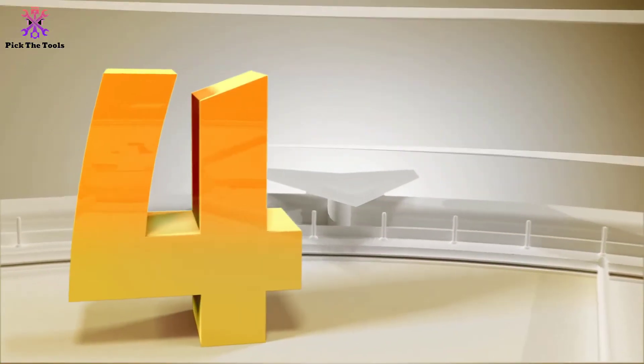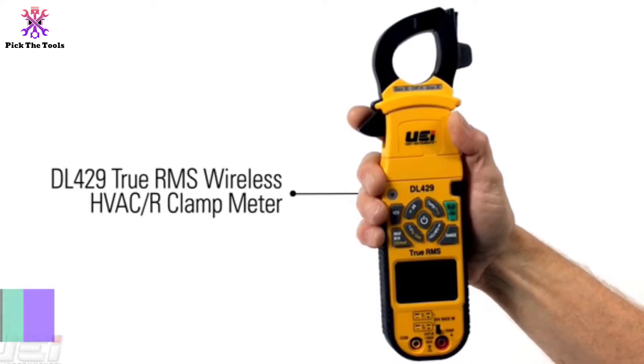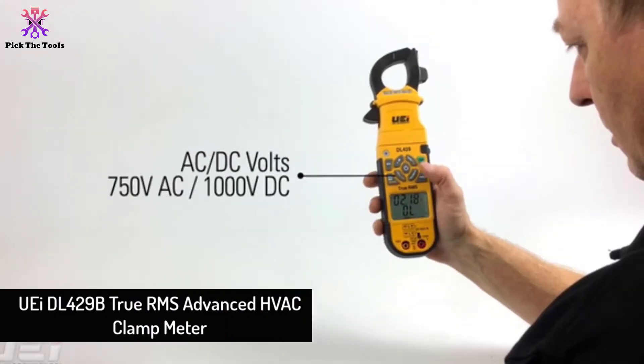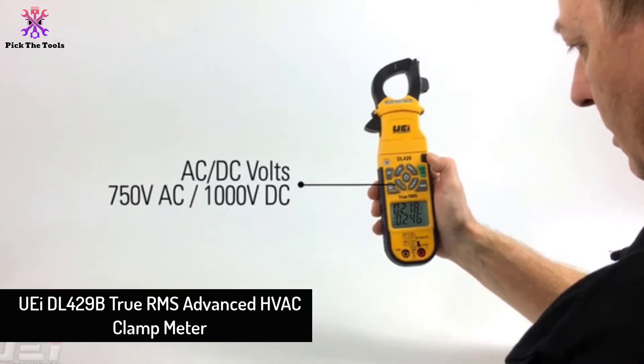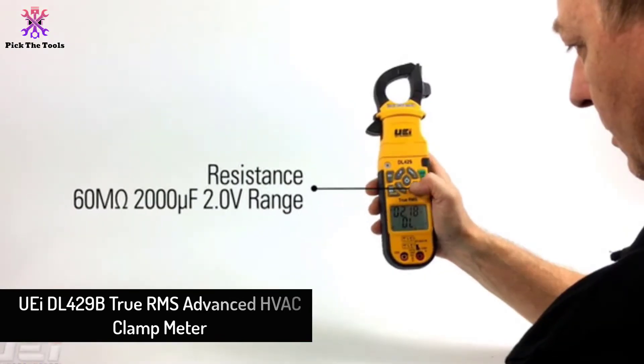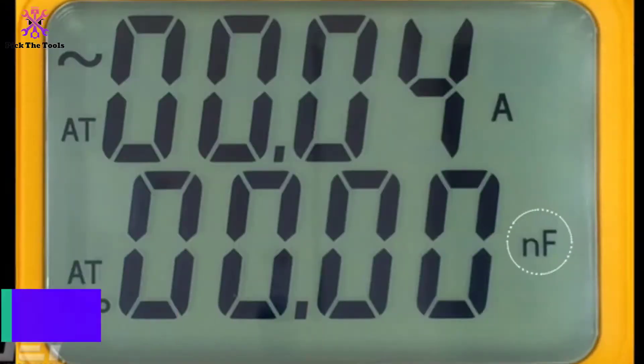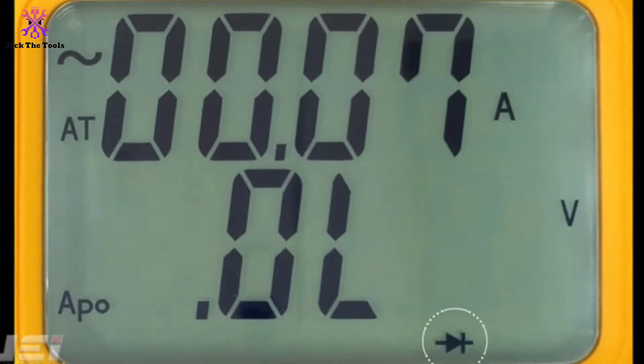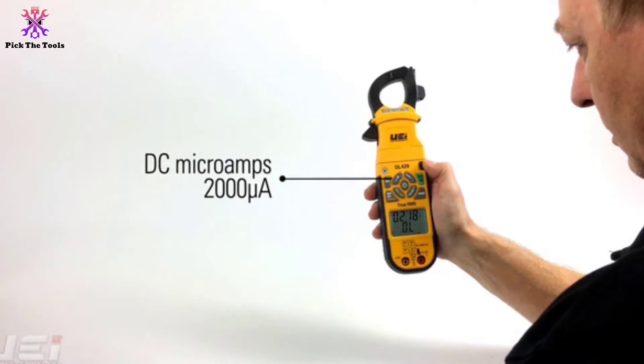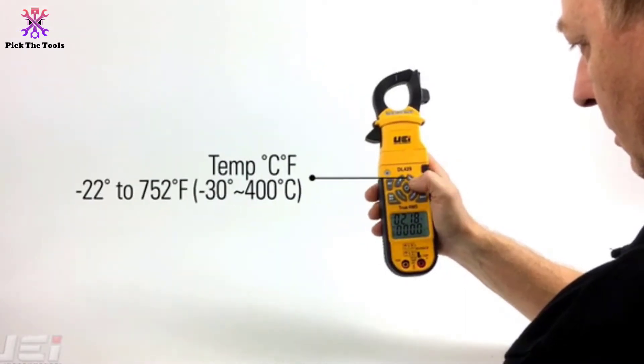Moving on at number 4, we have the UEI DL-429B True RMS Advanced HVAC Clamp Meter. Are you looking for a reliable and useful quality clamp meter? This HVAC certification UEI DL-429B True RMS Advanced HVAC Clamp Meter won't make you depressed.